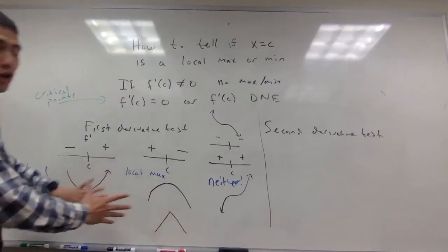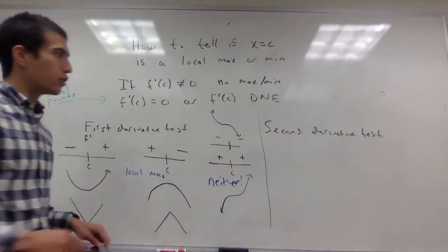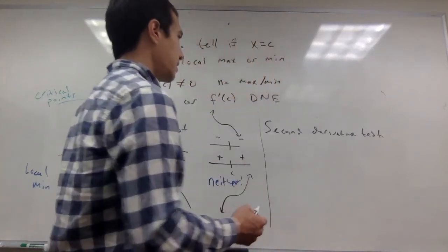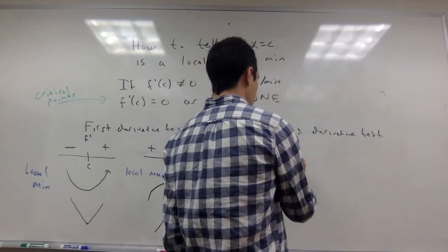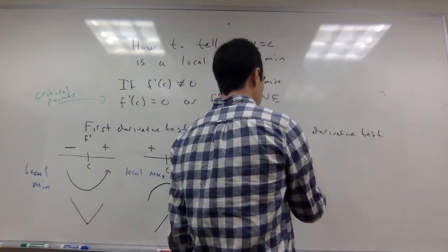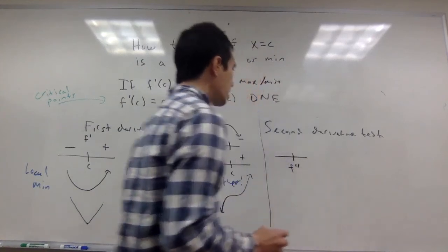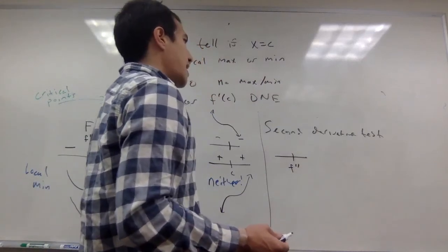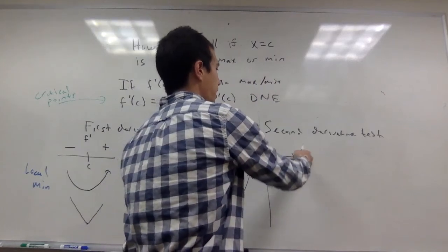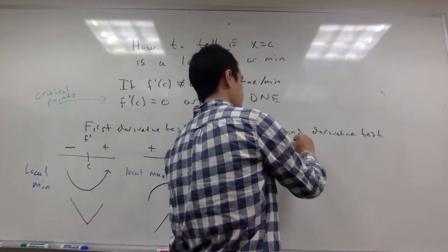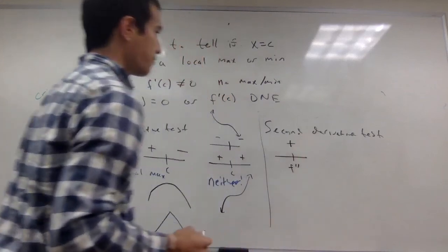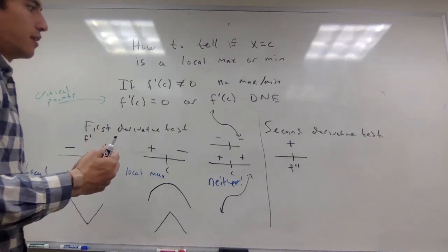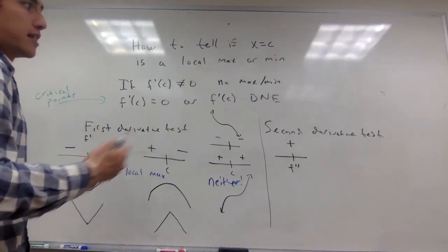The first derivative test is more useful than the second derivative test, but the second derivative test can also tell you something. The second derivative test looks at a sign chart for f double prime. Instead of looking at what's happening before and after C, we look at what's happening right at this point — specifically whether the sign of the second derivative is positive or negative.